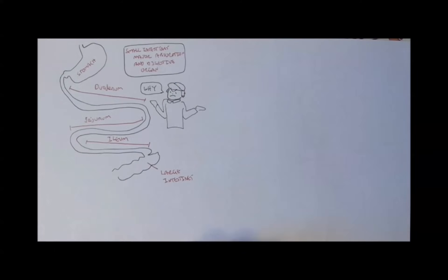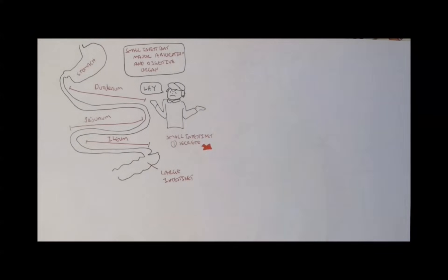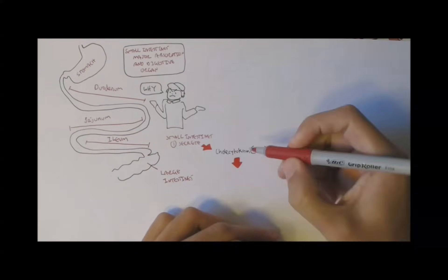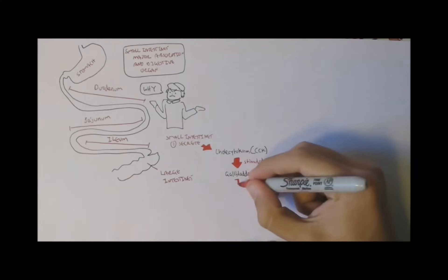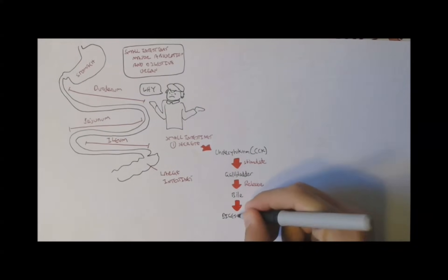So, why is the small intestine the main site of digestion and absorption? Well, for one reason, it secretes an enzyme. The small intestine secretes an enzyme called cholecystokinin, or CCK, which stimulates the gallbladder to release bile. And bile is used for fat digestion.